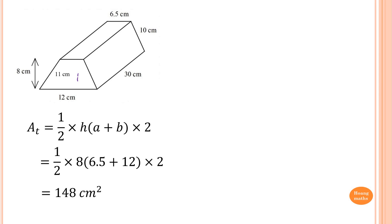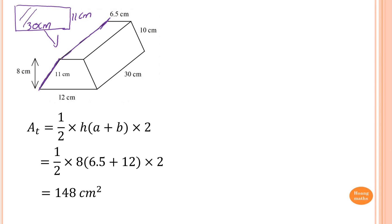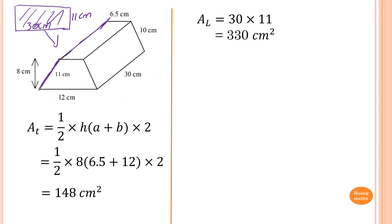To work out the area of the left side, the width is 11 cm and the length is 30 cm, so it's a rectangle. The area is length times width, which is 30 times 11, giving me 330 cm².